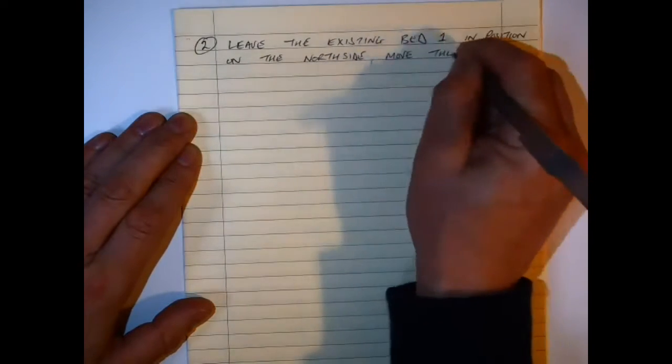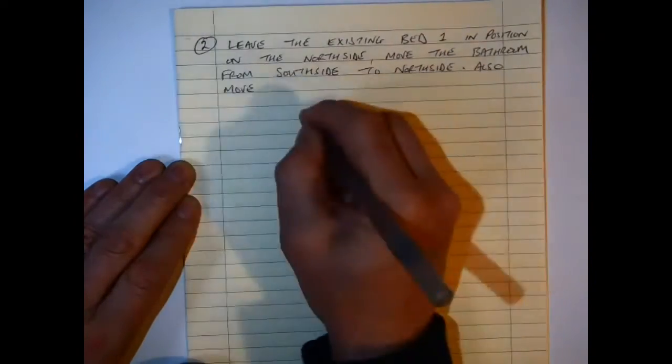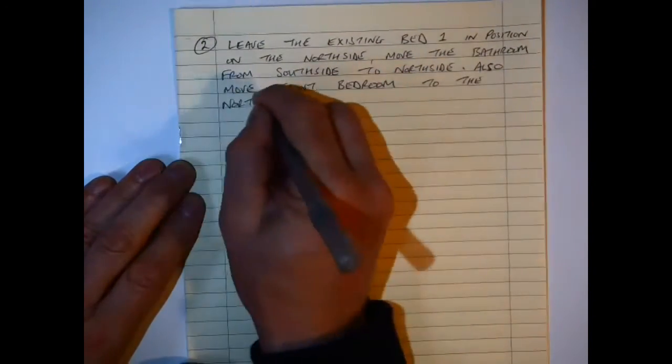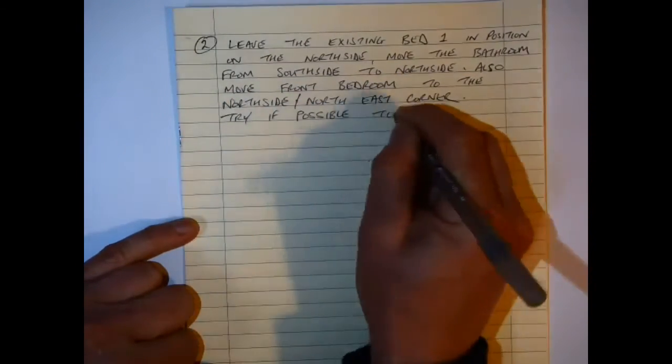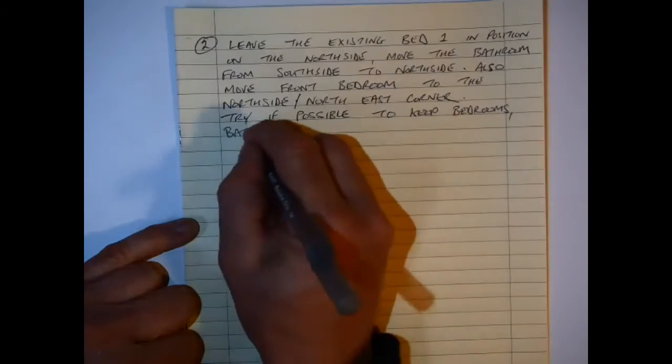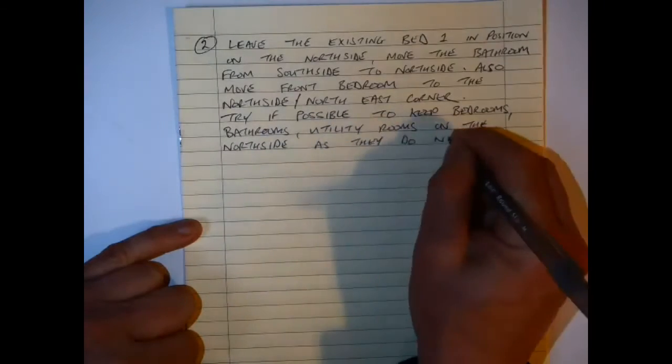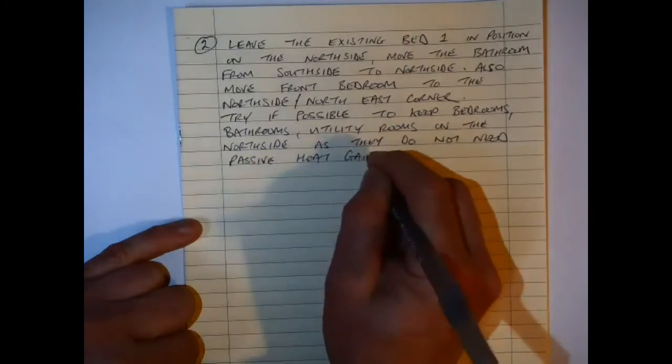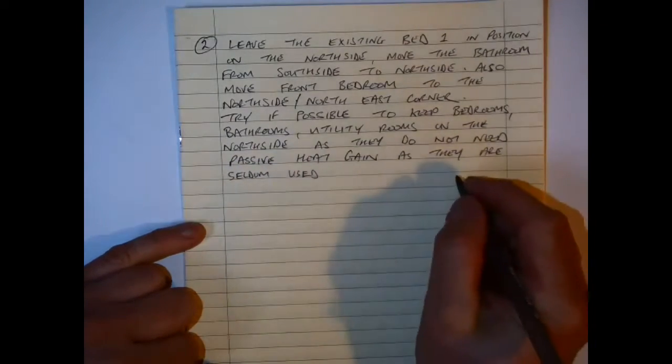The next point I want to make then is that I want to leave the existing bedroom one in position on the north side and move the bathroom from the south side to the north side, also to move the front bedroom to the north side, the northeast corner. And the reason behind this is just basically to try, if possible, to keep bedrooms, bathrooms, utility rooms on the north side as they don't need as much passive solar heat gain as they're seldom used by comparison with the living areas. So the most used rooms in the house really need the most passive solar heat and light. Remember the question focused on the light getting into the areas, so that's what we focus on in this.